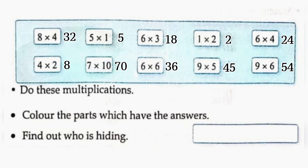Color the parts which have the answers. Find out who is hiding. In the picture, you have to color the answers: 32, 5, 18, 2, 24, 8, 70, 36, 45, 54. After coloring, we can see that it is a picture of a beautiful fish.